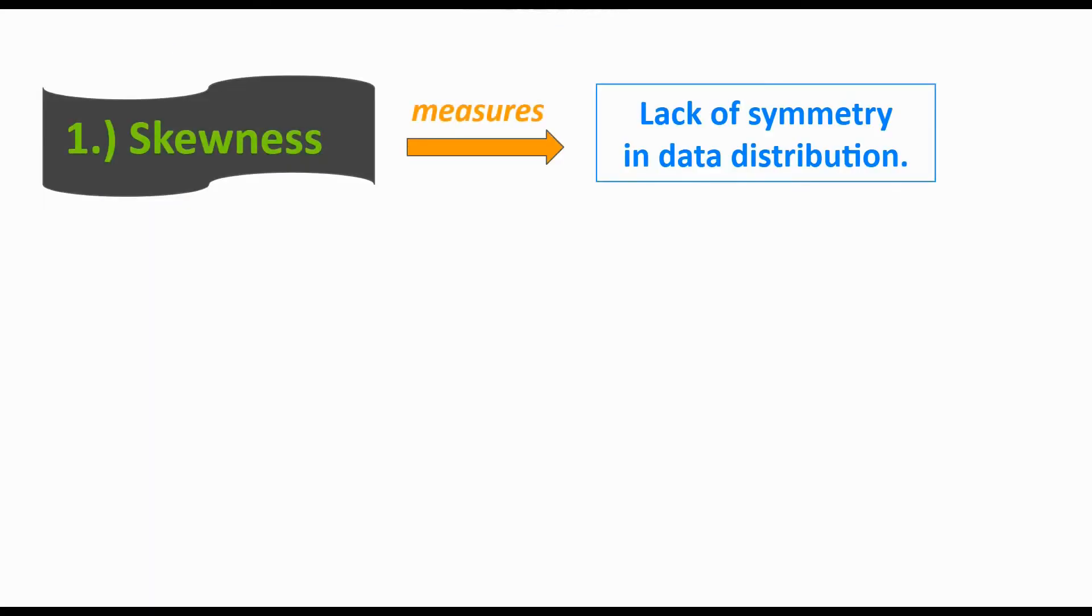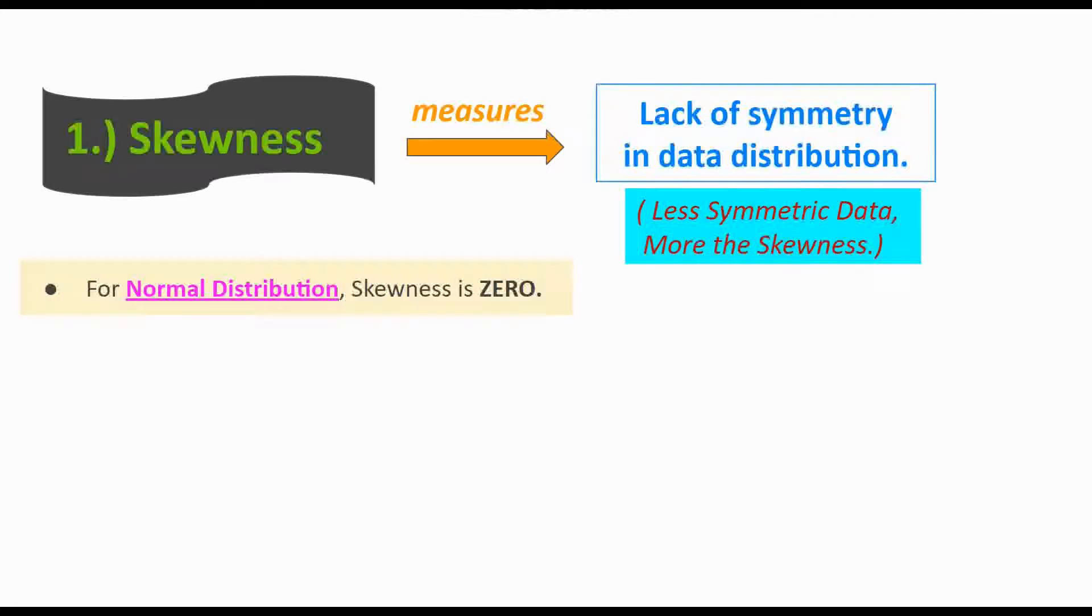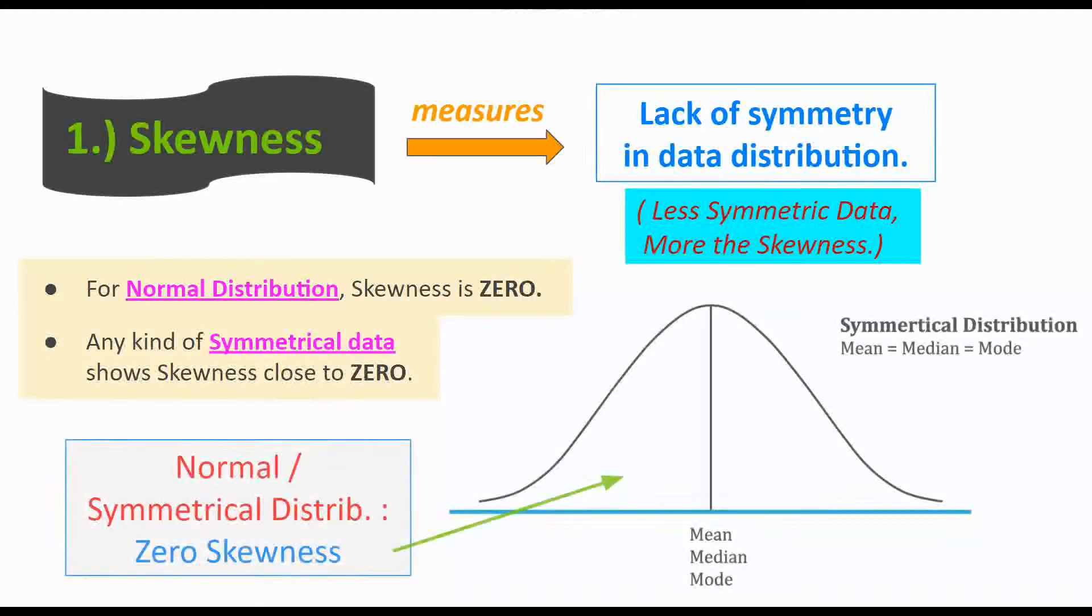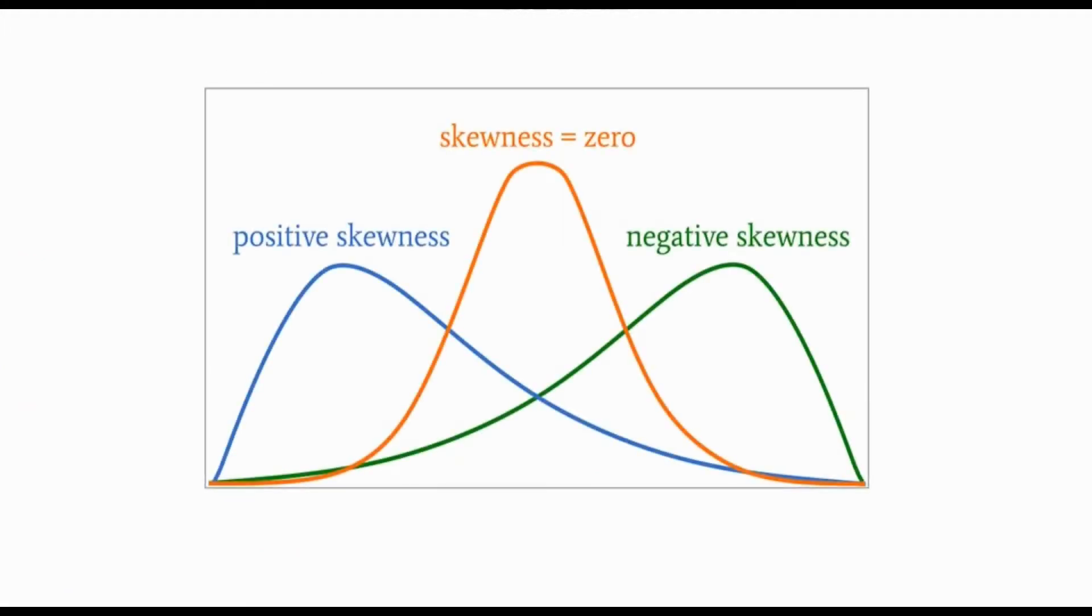Now skewness. In simple terms, it measures the lack of symmetry in your data distribution, how asymmetric your data distribution is. The less symmetric the data, the more will be the skewness. If you remember, the normal distribution is completely symmetric, so there the skewness is zero, and for any kind of symmetrical data the skewness will be more or less close to zero. We have zero skewness, positive skewness, and negative skewness.